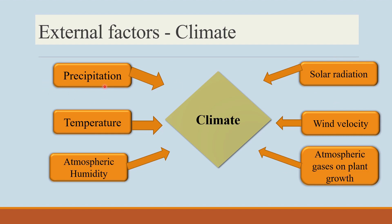Coming to precipitation — rainfall is one of the most important factors for crop production and vegetative crop growth. The total precipitation amount and distribution greatly affects the choice of cultivated species in a place. In areas with low and uneven distribution of rainfall, dryland farming conditions prevail, where drought-resistant crops like pearl millet, sorghum, and minor millets are grown.